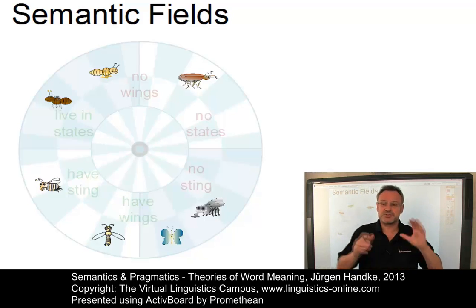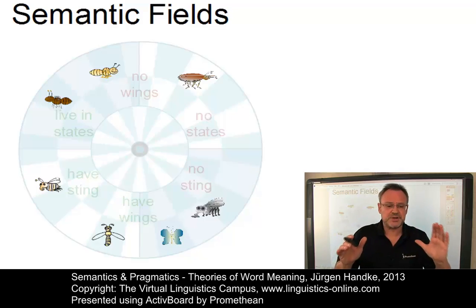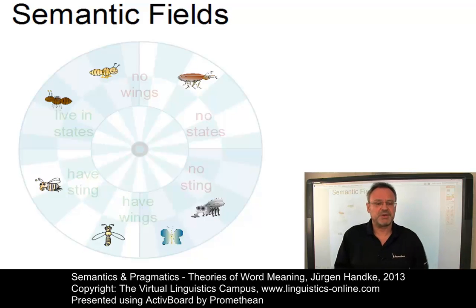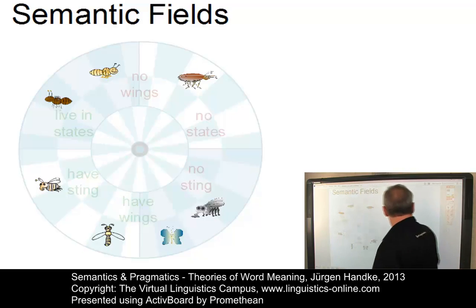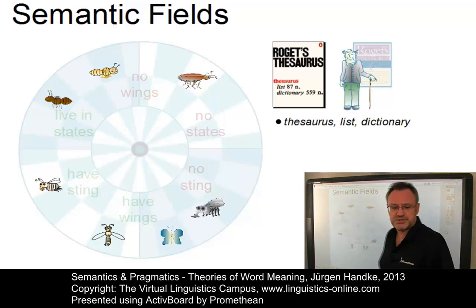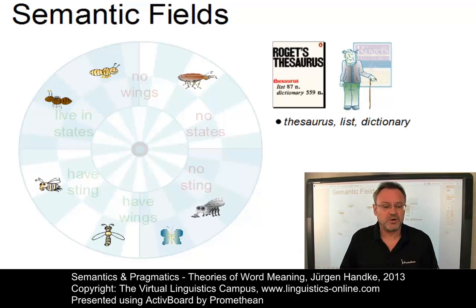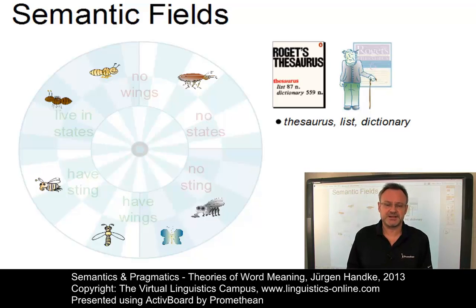Thus, semantic fields are not static constructs, but constantly expanding and contracting. Today, semantic fields are used, for example, in special word books such as Roget's Thesaurus. Furthermore, they have applications in the contrastive analysis of languages.